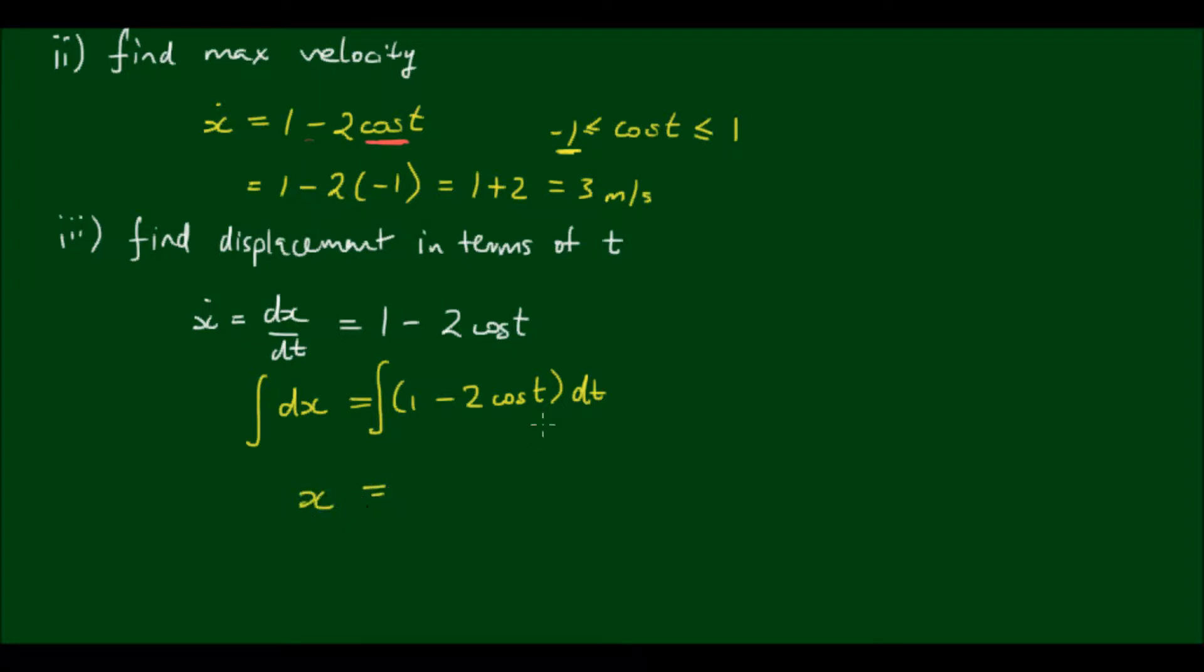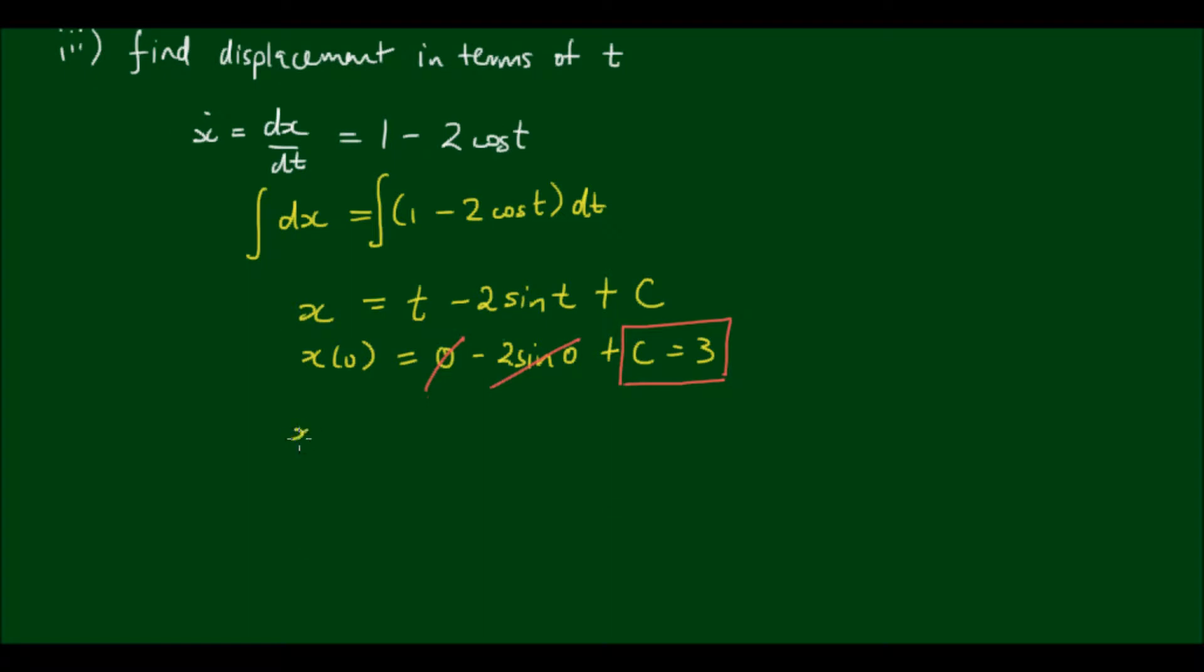The integral of dx is simply x. The integral of the right-hand side gives me t minus 2sin(t) plus an integration constant. But we're given at the beginning that the initial displacement is equal to 3 when t equals 0. So 0 minus 2sin(0) plus C equals 3 meters. Sin of 0 equals 0, so C equals 3. Our displacement in terms of t is equal to t minus 2sin(t) plus 3.